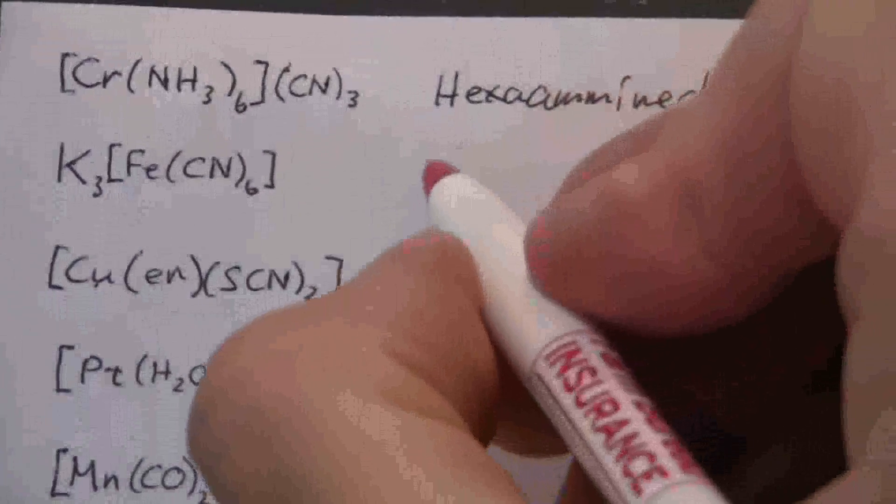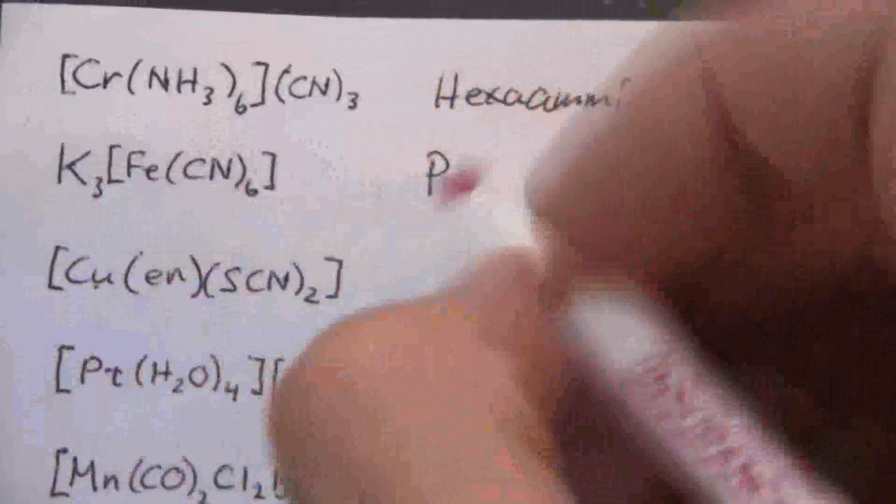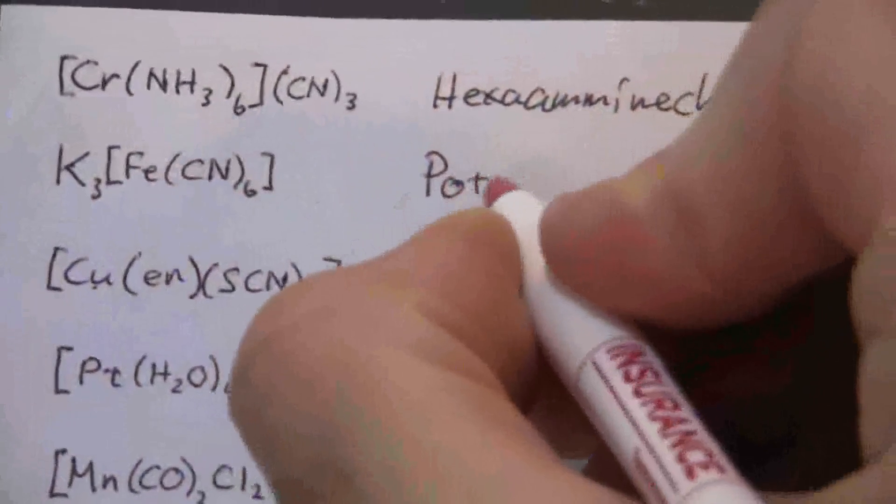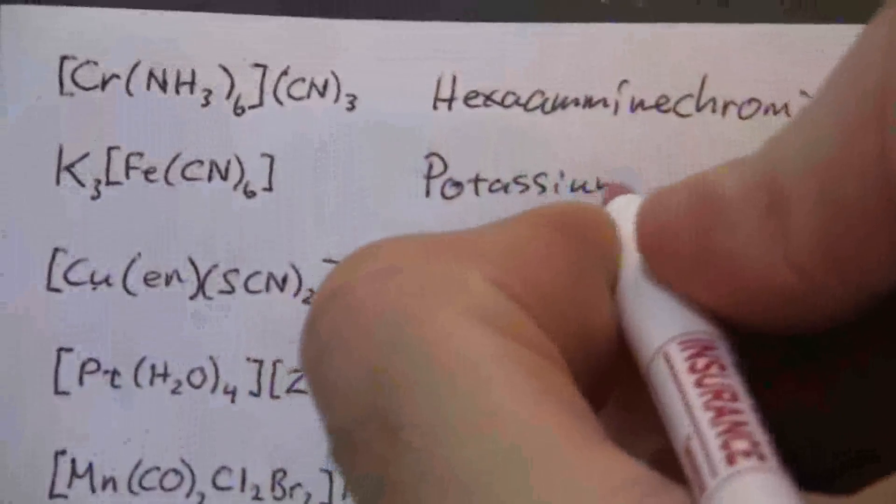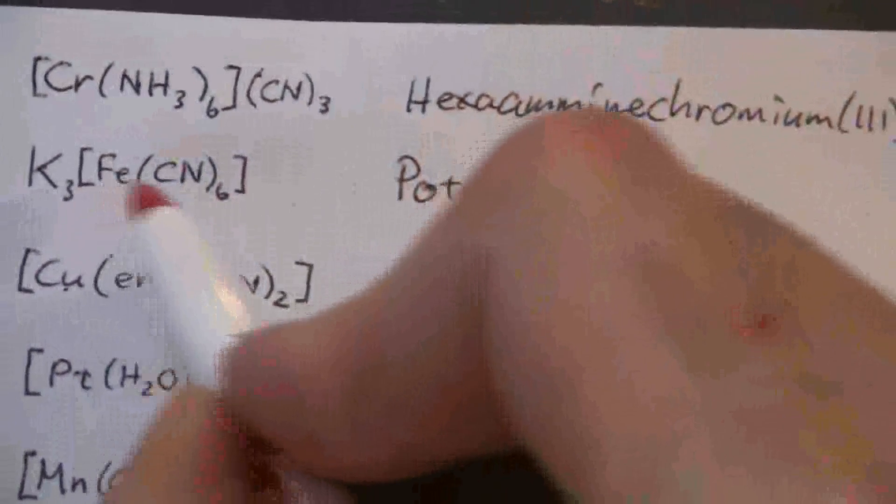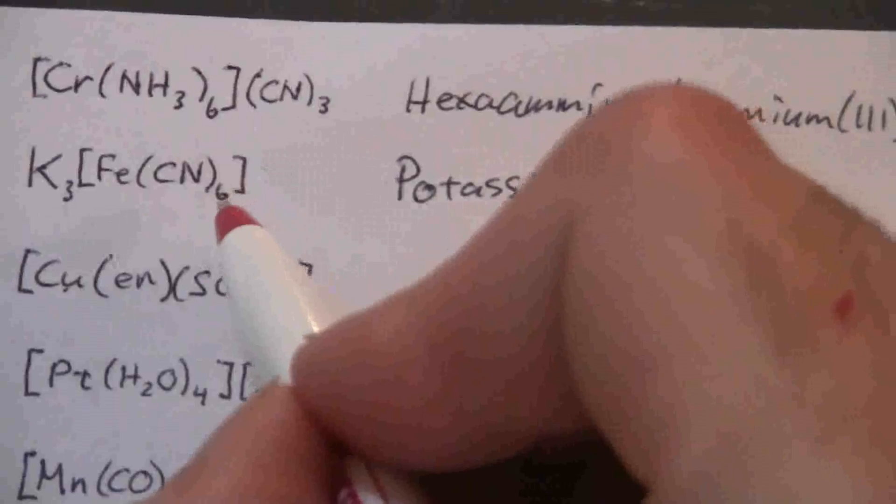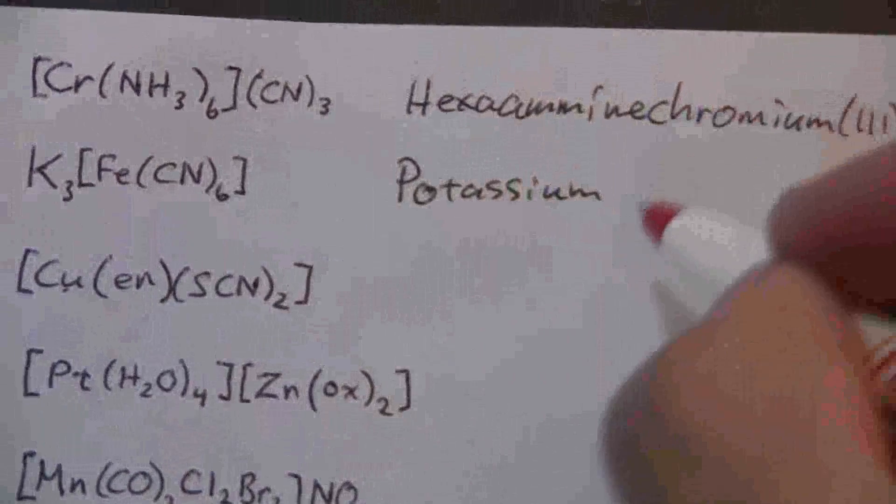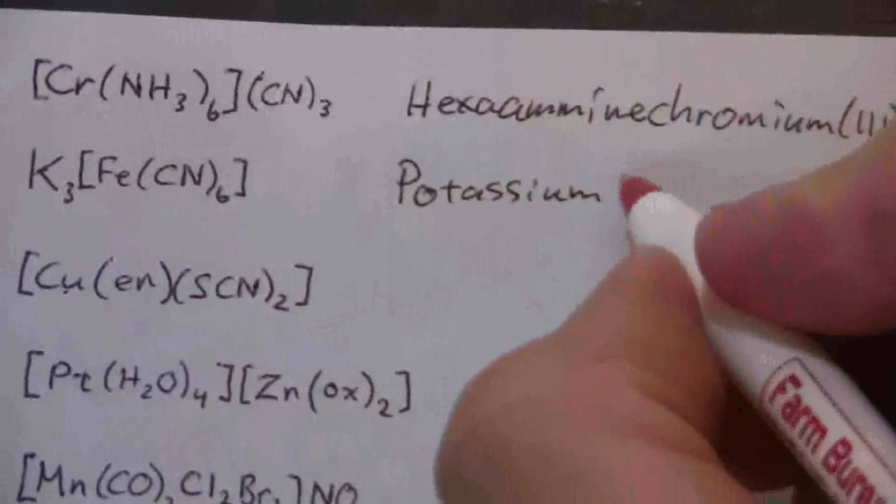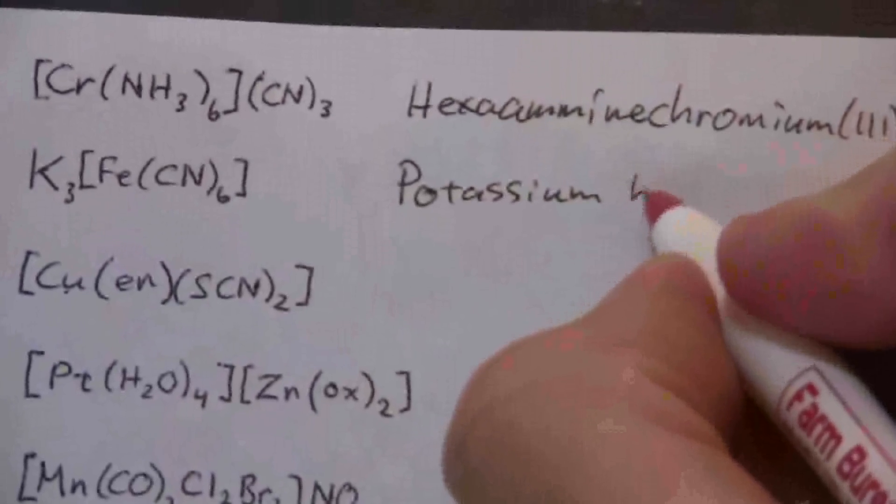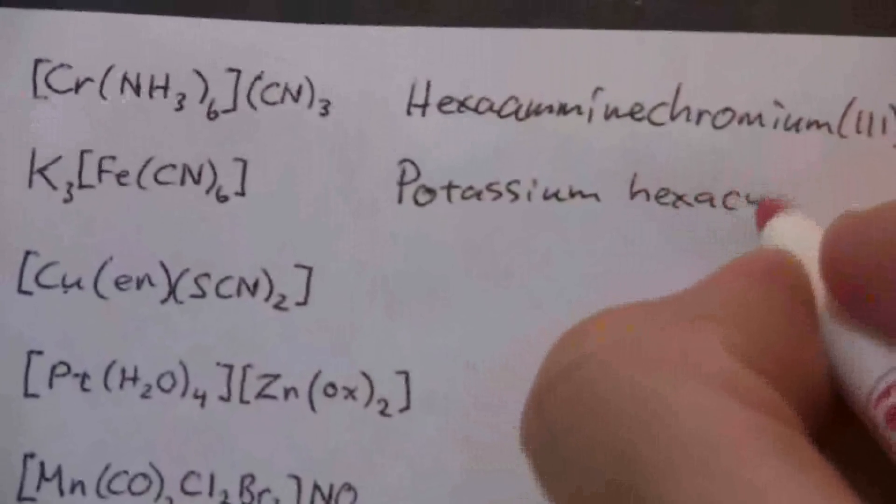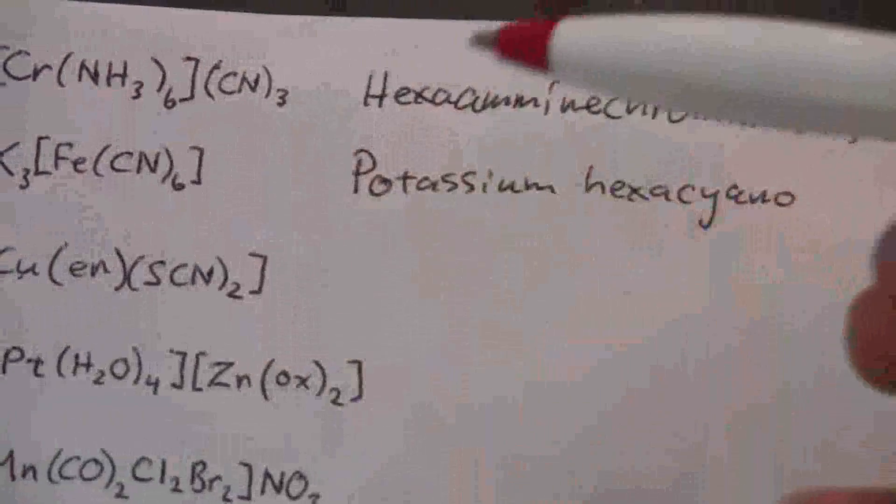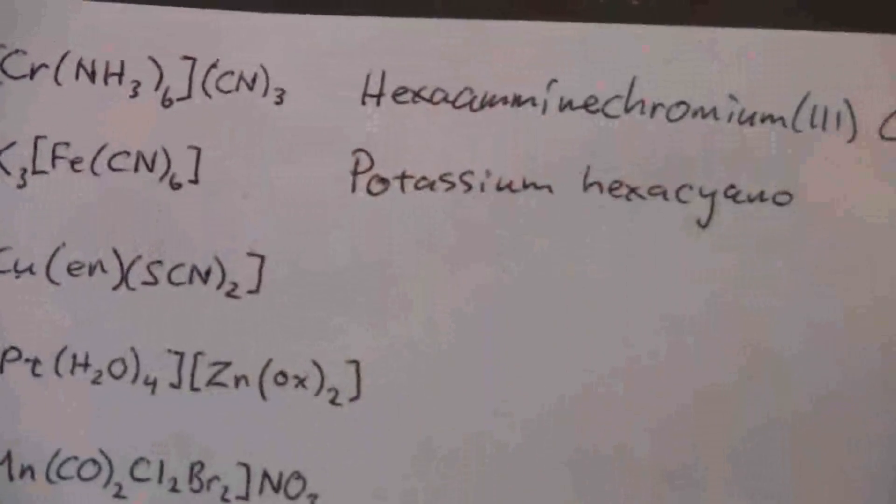Okay, so here we start off with the cation, so that's just potassium, and then we name the ligand first, so hexacyano. Or rather hexacyano—remember we changed the ending from IDE, we drop the IDE and put an O.